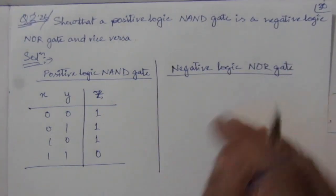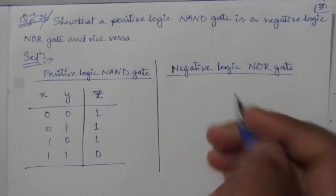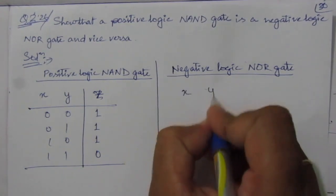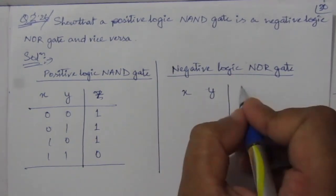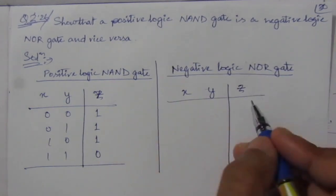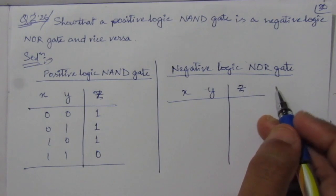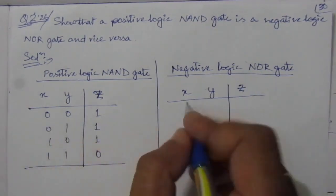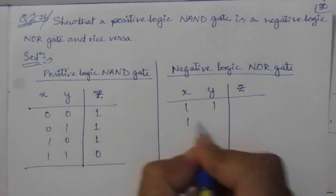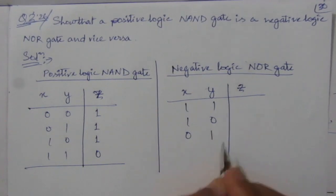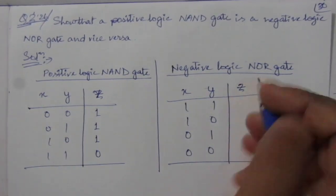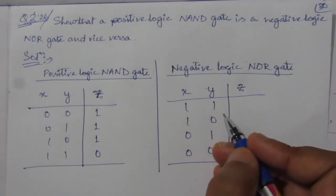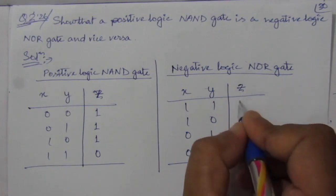A NOR gate is nothing but an OR gate followed by an inverter or NOT gate. Here also we let x and y be the inputs and z be the output of the NOR gate. For negative logic, the input will be negated or inverted. So 0,0 becomes 1,1; and 0,1 becomes 1,0. Similarly, 1,0 becomes 0,1 and 1,1 becomes 0,0. Now for the NOR gate output: 1 OR 1, the OR gate output will be 1, so the NOR gate output will be 0.